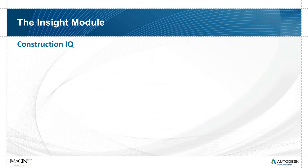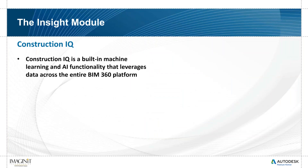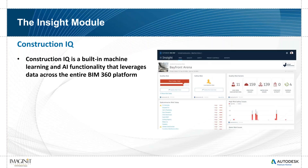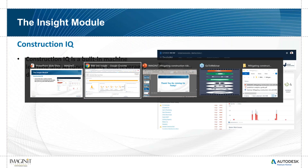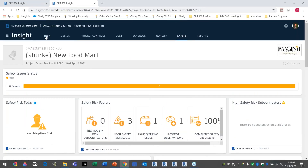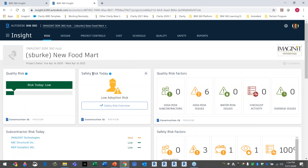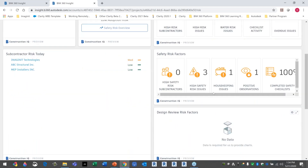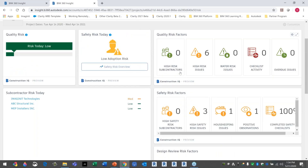Let's talk a bit more about Construction IQ. It's interwoven across all the cards and tabs — built-in machine learning and AI functionality that looks across the entire BIM 360 platform and across projects. Going back into the software, there is a Risk tab. This is where the AI really lives. Everything on this page is essentially AI — all the risk factors are using Construction IQ. You can see the Construction IQ label on these cards so you know they're coming from that system.